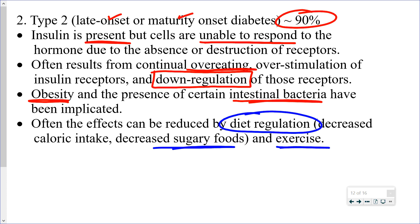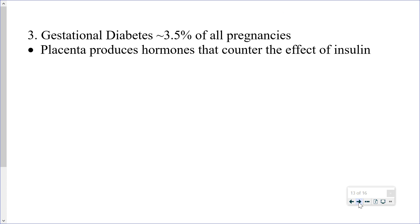Gestational diabetes occurs when a female is pregnant. The fetus wants to maximize nutrient intake from the mother, keeping the mother's blood glucose high. Hormones produced by the placenta counter the effects of insulin to keep blood glucose elevated. About three and a half percent of all pregnancies result in gestational diabetes. It usually disappears after birth, but sometimes persists, and the female would then be considered to have type 2 diabetes.